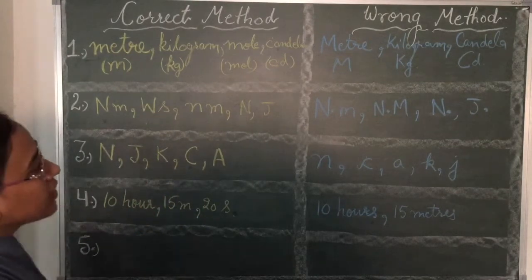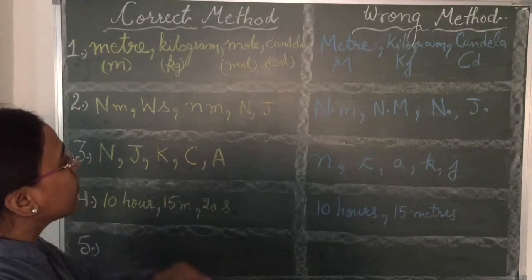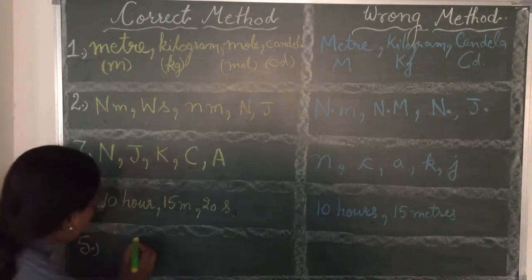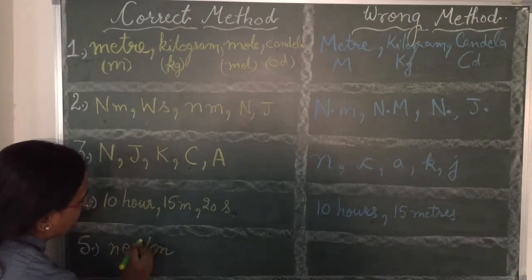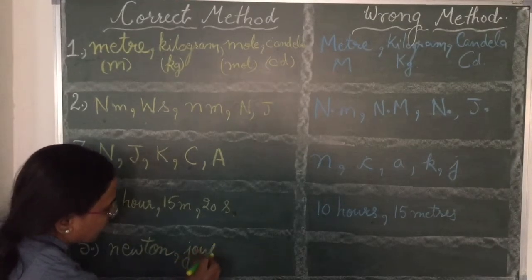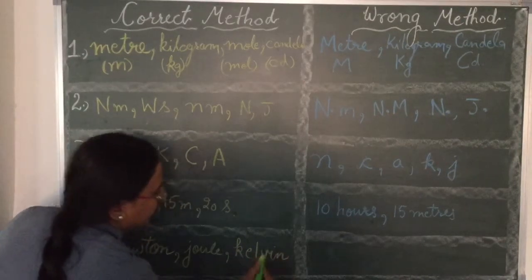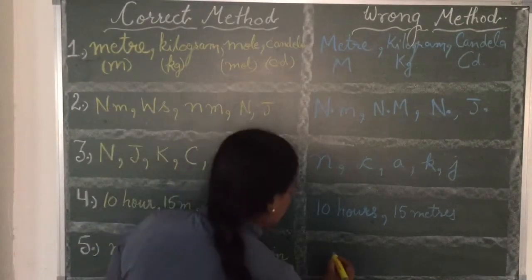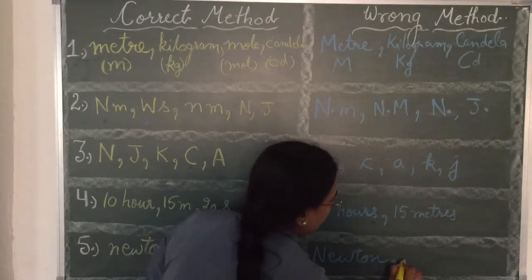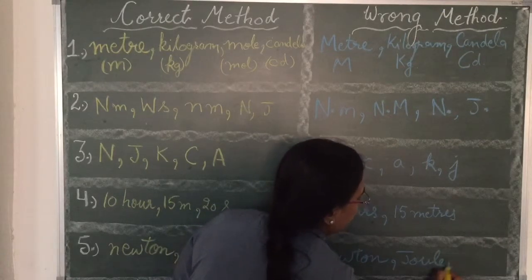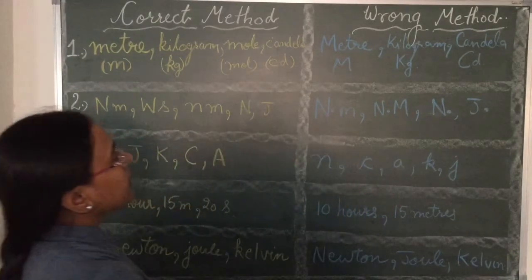And the fifth one is, if you are writing the full name of a unit and even if it is started with the name of a scientist, then also, the unit should begin with a small letter. That is, Newton, Joule, Kelvin, and so on. Not like this. And generally, we make this mistake. Newton, Joule, Kelvin, these are very small one, but should not be ignored while writing it in symbol form.